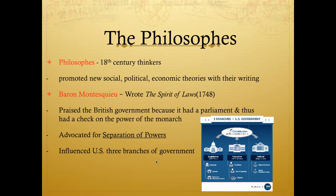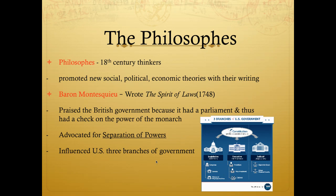The philosophes promote new social, political, and economic theories. Baron Montesquieu advocates separation of powers — he believed that if one person or one branch of government holds too much power, it is an invitation for tyranny. By separating power in government, there can be checks and balances so no one branch becomes too powerful. This becomes a mainstay in the American Constitution, where we see three branches of government: the legislative, the executive, and the judicial.